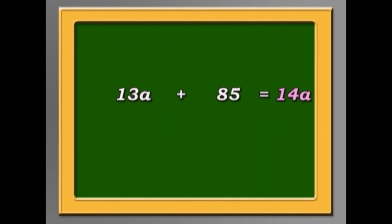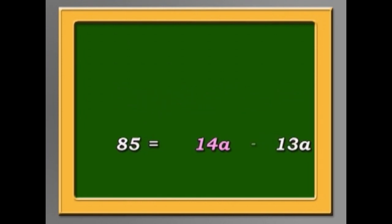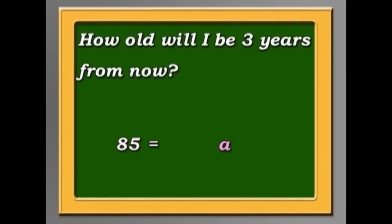We move the 13A over to the other side, and we get 85 equals 14A minus 13A. So A equals 85. In three years time, I'll be 85 plus 3. That's 88 years old.